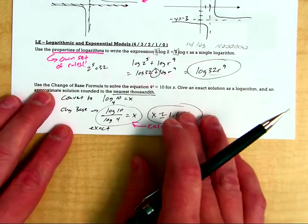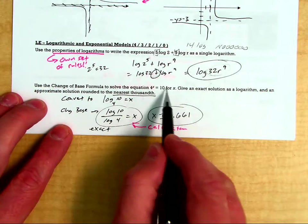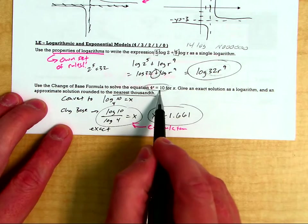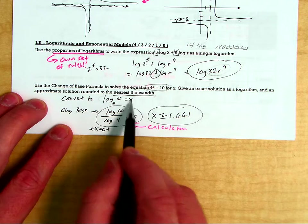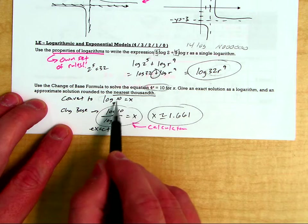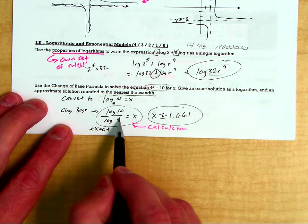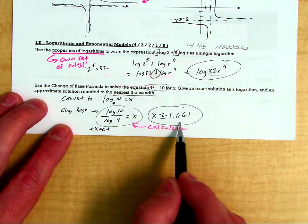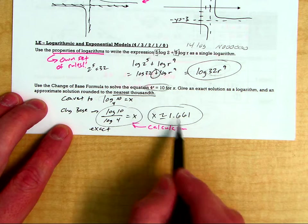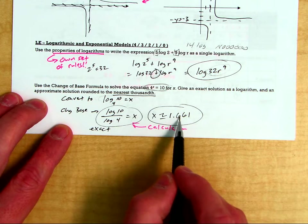Down here you also got to understand you can convert this exponential into a logarithmic expression and then use change of base formula to find the exact answer and then use a calculator to find the correct approximate answer to the nearest thousandth. Okay, turn the page.